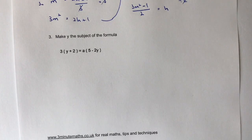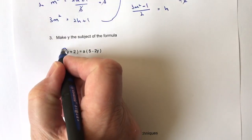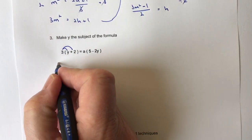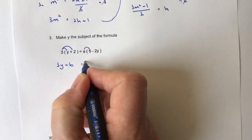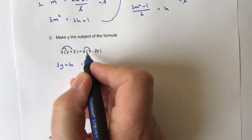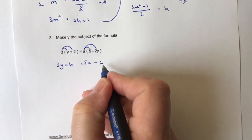So what I'm going to do first is I'm going to get rid of the brackets by multiplying everything through. So this side I'm going to get 3Y plus 6, this side I'm going to get 5A minus 2AY.